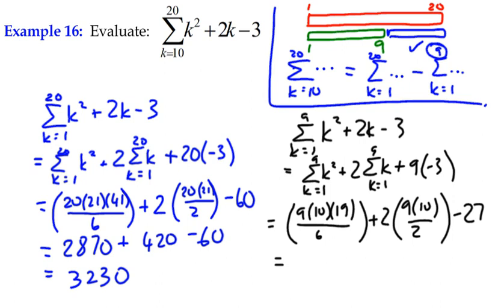9 times 10 times 19 is 285, plus 90, minus 27, gives us a value of 348.